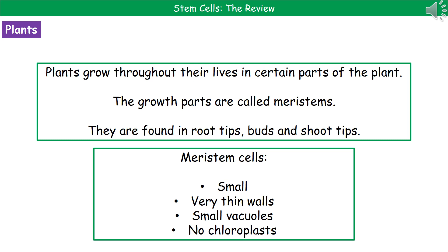We find meristems in the root tips, the shoot tips, and the buds. When looking at meristem cells, there are four key things to remember: they are very small, they have very thin walls, they have only small vacuoles, and there are no chloroplasts present. Make sure you remember the difference in terminology — when talking about animals it's stem cells; when talking about plants it's meristem cells.